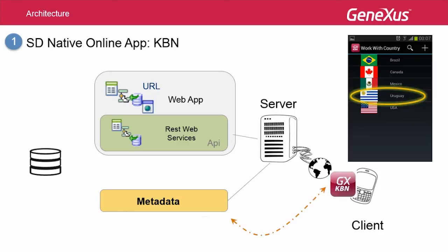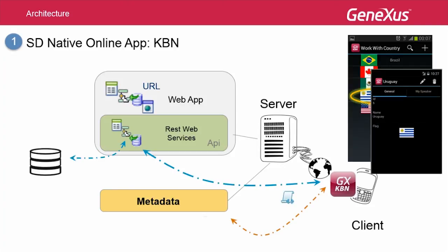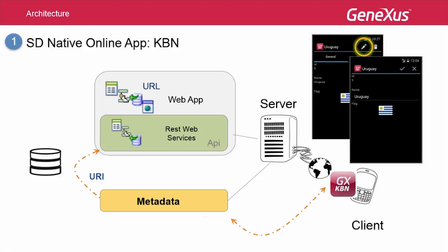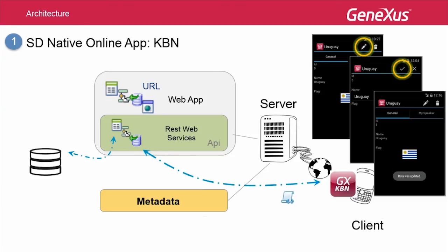Similarly, if we tap on an element from the list, the data provider will be called, returning the country information to set up the view screen. If we then do an update, delete, or an insert from the list, we find that we must save the edit screen. Upon trying to save, the REST service invoked will be the business component that will try to perform the corresponding operation on the database, returning the result of the operation to the caller. In case of failure, the error messages are shown to the user on the device's screen. If successful, a corresponding message will be shown.